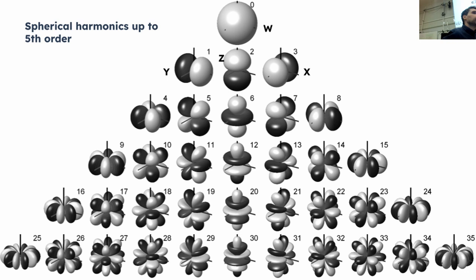Does it still sound good if you make your composition in fifth order and then play it back in lower order? You don't actually lose musical information — you only lose spatial information. In the first channel, Omni, there's everything always. You only get sharper localization when you add orders, but you shouldn't lose any musical information at all.